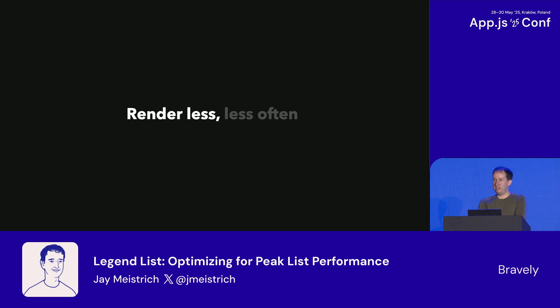So those are the main techniques to render as little as possible: the outer list never re-renders, and the containers only render when their item or position changes. Now let's move on to less often.